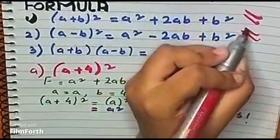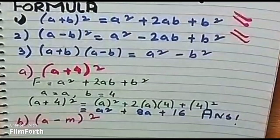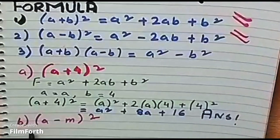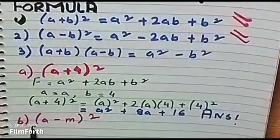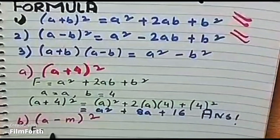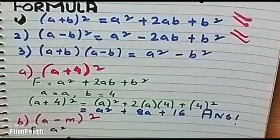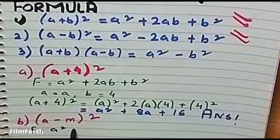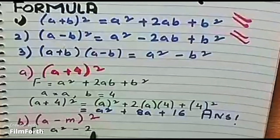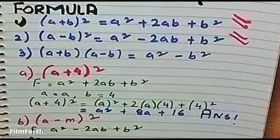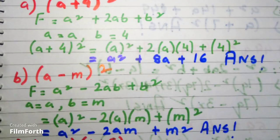For the second one I have a whole square example. The formula I am going to apply is a² - 2ab + b², where a is equals to a and b is equals to m.